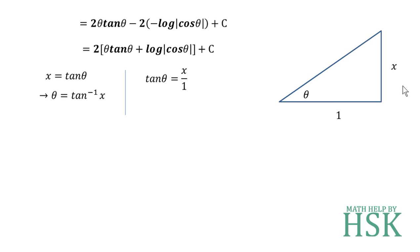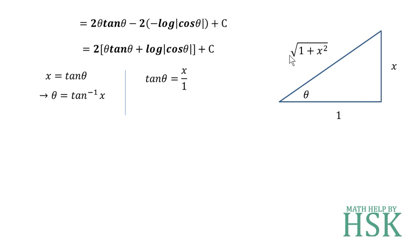I use the triangle method because when you solve a large number of problems it is very easy to find cos θ from the triangle rather than remembering values or using trigonometric identities. Since tan θ = x/1, the two sides of the right-angle triangle are x and 1, so the hypotenuse is √(1 + x²), and therefore cos θ = 1/√(1 + x²).